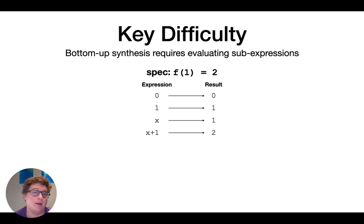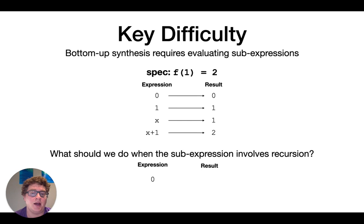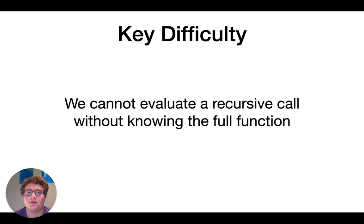But what should we do if the sub-expression involves recursion? As before, we have zero goes to zero, but now let's say I'm making a recursive call on that zero. What should the result be? We don't actually know, and this highlights the key difficulty. We cannot actually evaluate a recursive call without knowing the full function.